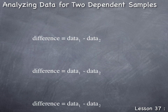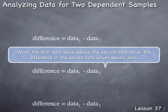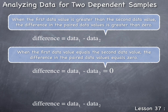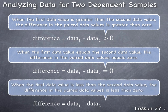When the differences in the paired data values are calculated, three different types of results can occur. First, when the first data value equals the second data value, the difference equals zero. Second, when the first data value is greater than the second data value, the difference is positive, or greater than zero. Third, when the first data value is less than the second data value, the difference is negative, or less than zero.